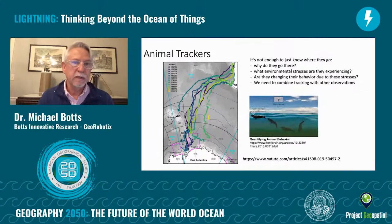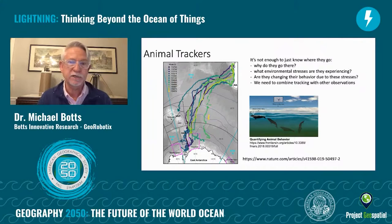Now the animal trackers need to do more than just let us know where the animals go. We need to understand why they go there, what environmental stresses they are experiencing, and whether they are changing their behavior due to these stresses. We need to combine tracking with other observations to make these kinds of measurements.